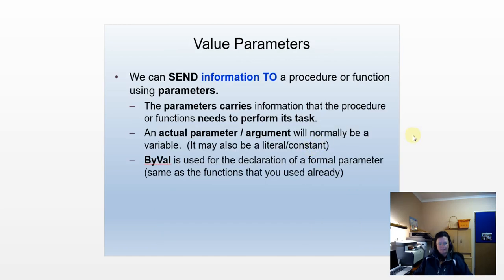Value parameters: when we use value parameters, data is sent to a procedure or function. The parameter data is used to carry out the task of the procedure or function. The actual parameters — those in the call statements — would normally be a variable, but they can be a literal or a constant as well. I will always use ByVal for these formal parameters. The reserved word ByVal specifies that data is sent to the procedure or function and I'm only going to use it.